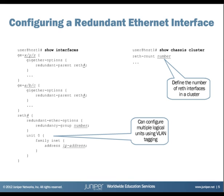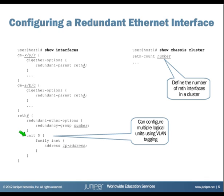First, we need to define the reth count. Note that this is done under edit chassis cluster configuration. We configure the reth count because these are pseudo interfaces — this tells Junos to create the number of pseudo interfaces we need to support for this application. Then we configure the reths themselves — the redundant interfaces. If we put a reth count of 2, Junos will automatically create reth0 and reth1 pseudo interfaces. When configuring a reth, we configure its number and, under redundant-ethernet-options, define what redundancy group it's a member of.